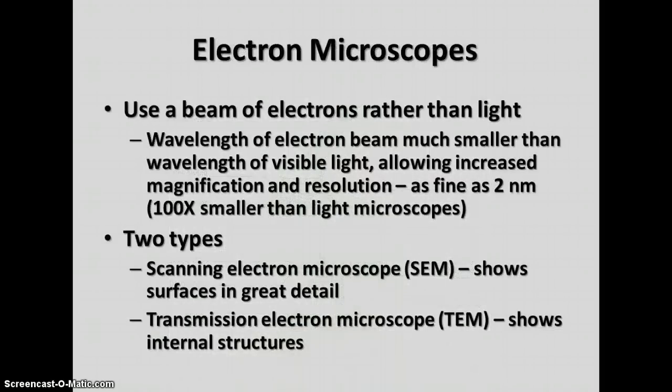In the mid-20th century, electron microscopes were invented. These allow us to see things even smaller than light microscopes can because rather than a beam of light, they use a beam of electrons. The wavelength of the electron beam is much smaller than the wavelength of light, allowing increased magnification and resolution as fine as 2 nanometers — a nanometer is one-thousandth of a micrometer — making these 100 to 1,000 times finer than light microscopes. There are two main types of electron microscopes.